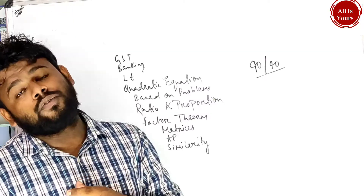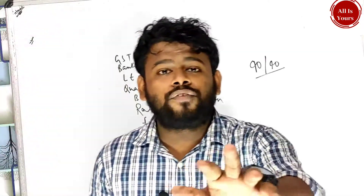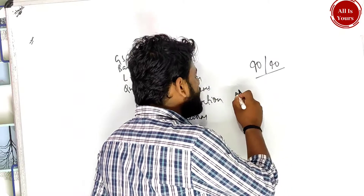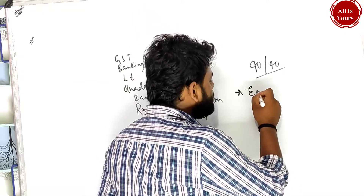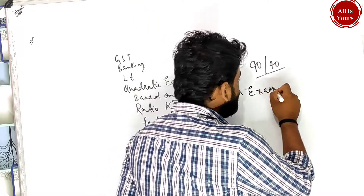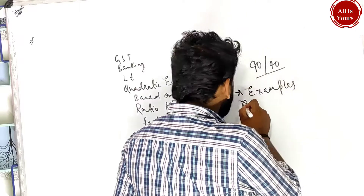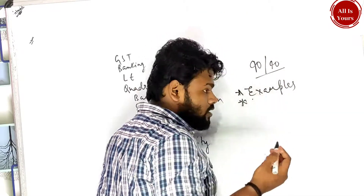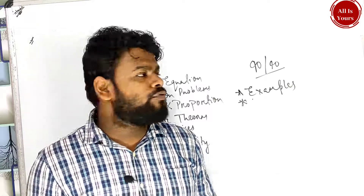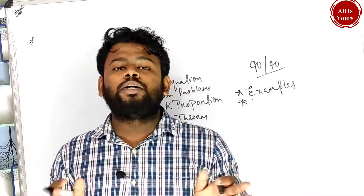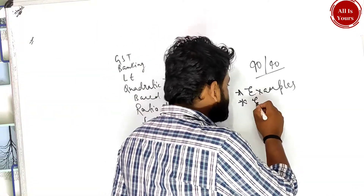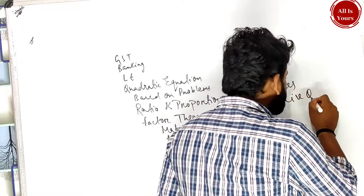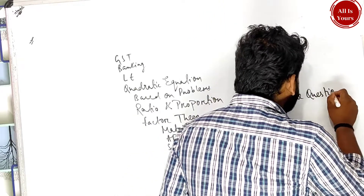How to score 40 out of 40: your first priority should be to complete all the examples — whether you are following ML Aggarwal, the concise book, or any other book. First, complete all the examples, then after that do the exercise questions.